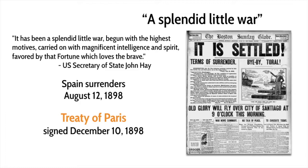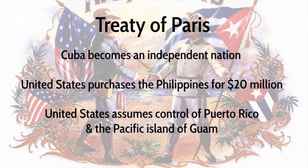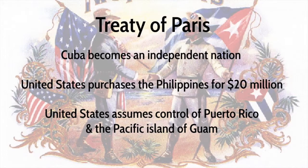Anytime there's a war, we want to know what happens afterwards — what is in this treaty and who gets what? In the Treaty of Paris, Cuba will become an independent nation. Remember, according to the Teller Amendment, the United States is not there to take control of Cuba — Cuba will be a free country. The United States agrees to purchase from Spain the Philippine Islands for $20 million. The United States will also get control of the island of Puerto Rico as well as the Pacific island of Guam.